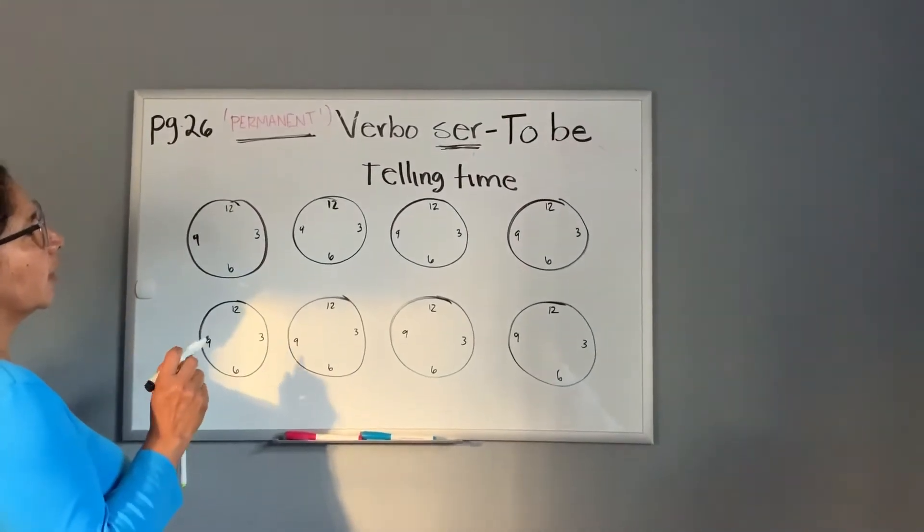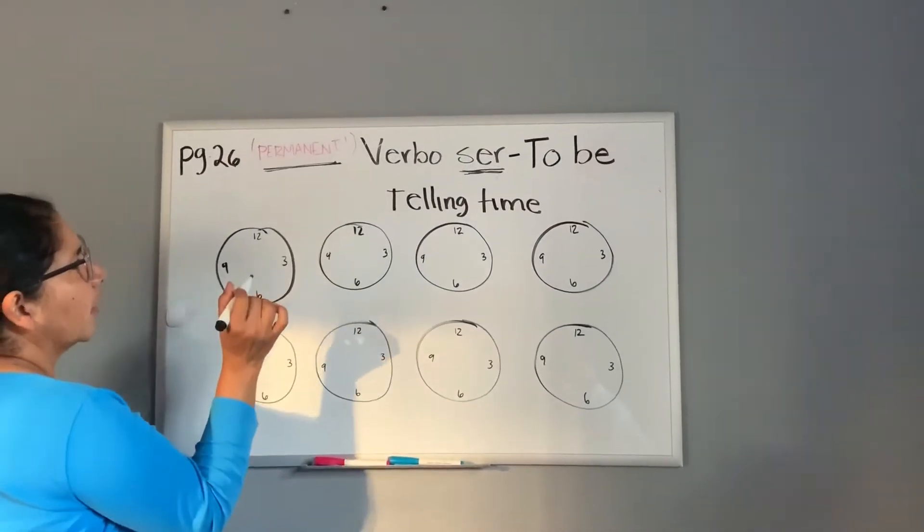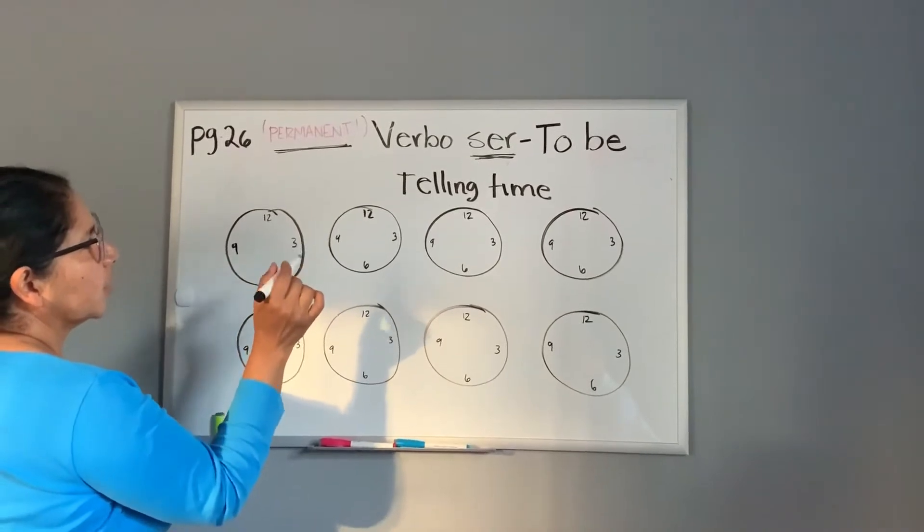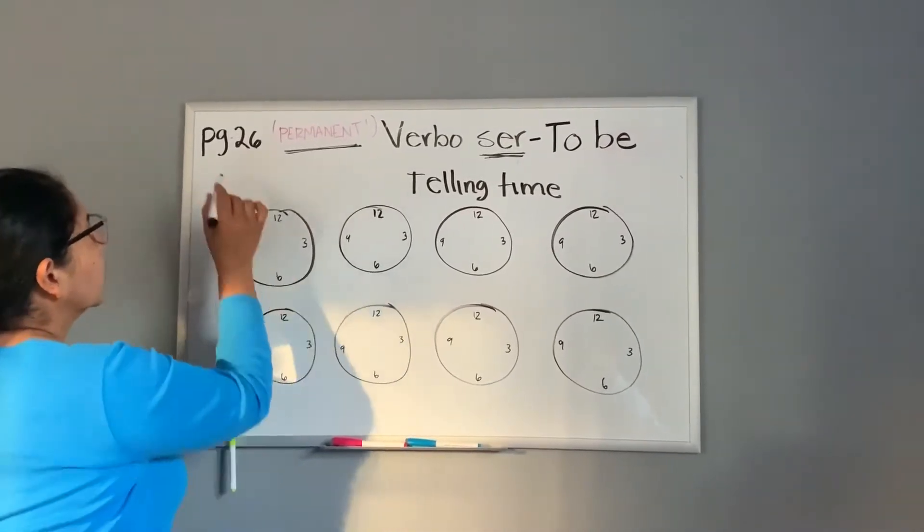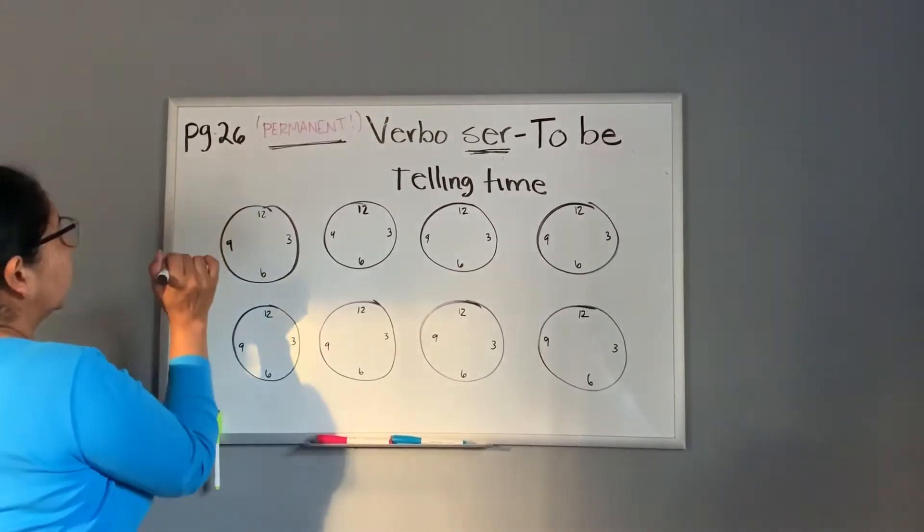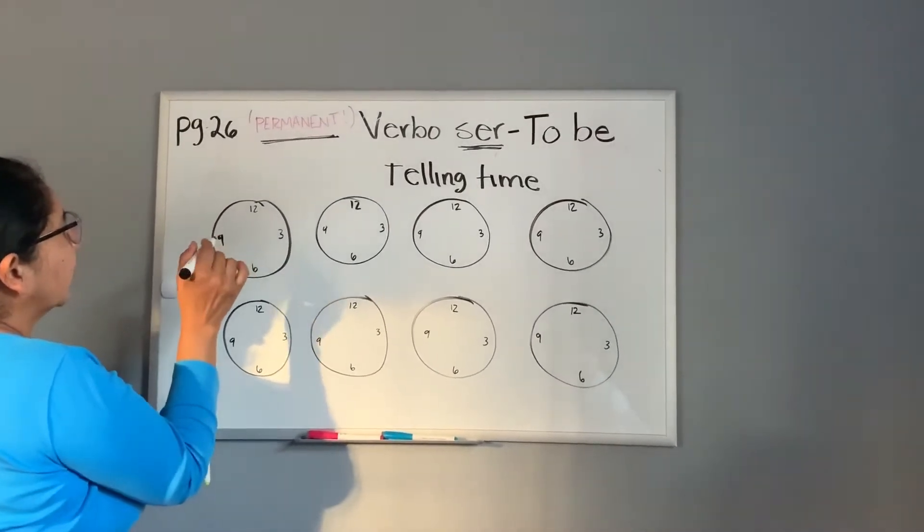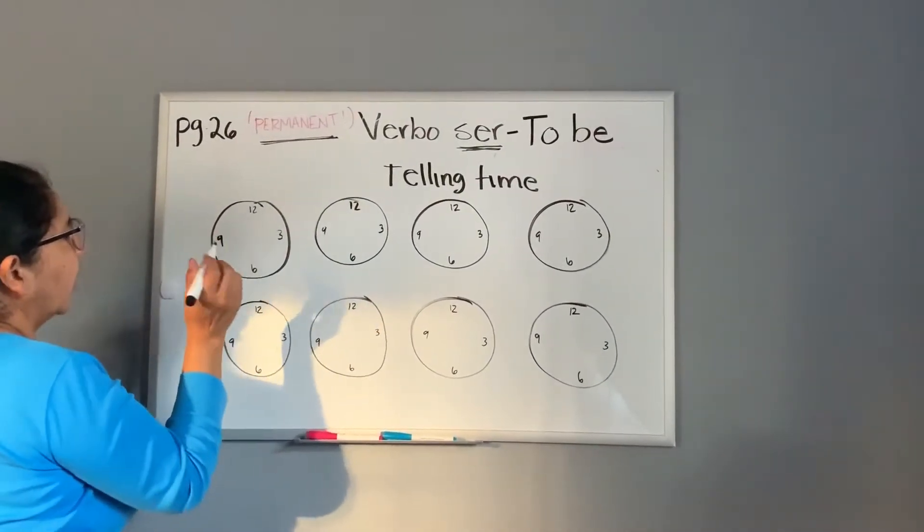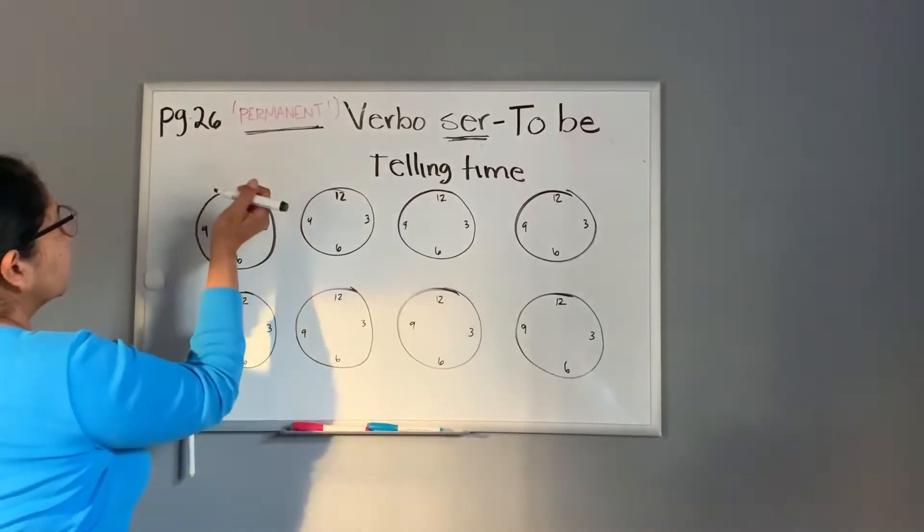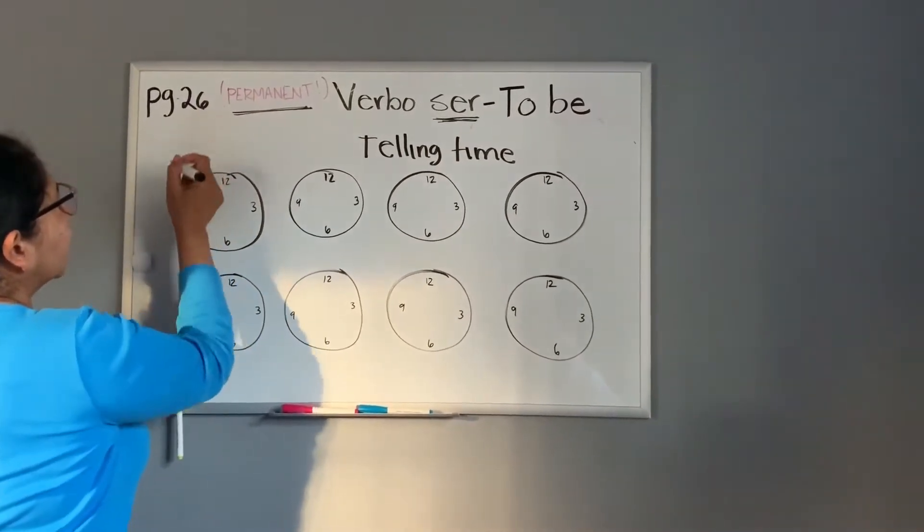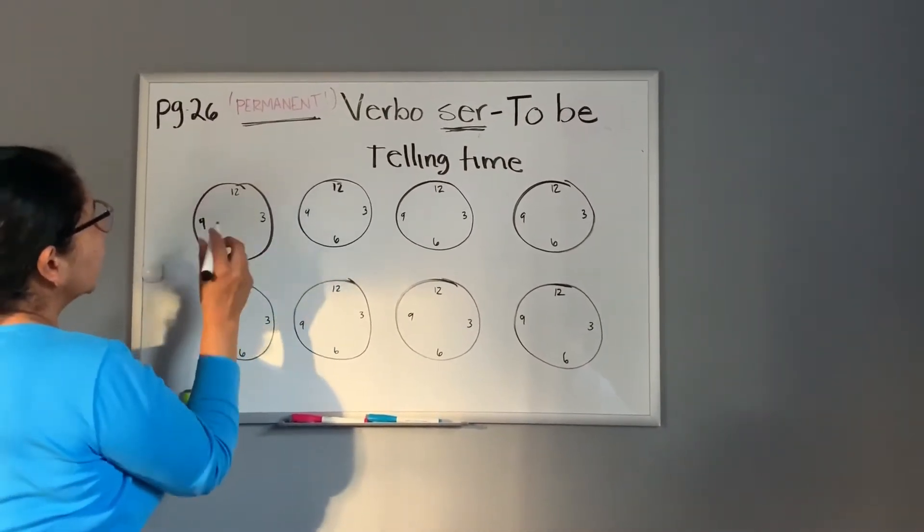Now we're going to continue with telling time. Remember that we talk about el verbo ser. El verbo ser is also to tell time. So you can find the information on page 26, however, in your book it's going to be a different page. But it doesn't matter.